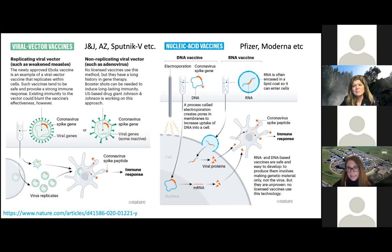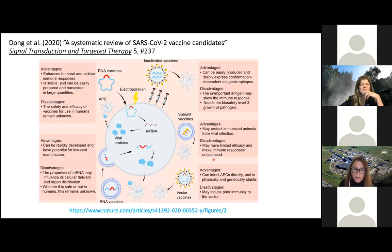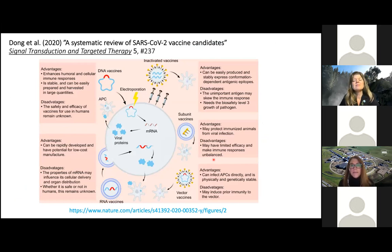Then there are nucleic acid vaccines — no vaccines in use based on this technology yet, but the two front runners showing very high efficacy are the Pfizer and Moderna vaccines, which are RNA-based. They contain bits of RNA coding for the spike protein or parts of it, encased in a lipid shell and injected. These represent the newest and least established platform among all the vaccine approaches being pursued.